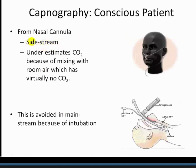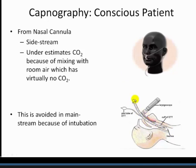Sidestream capnography is quick and can work with nasal cannula — patients simply wear the cannula around their ears while oxygen is blown into their nose. However, a problem with sidestream is that CO2 can be underestimated because it mixes with room air, which has virtually no CO2, causing leaks in the system and readings that are generally lower than what's actually there. This is avoided with mainstream capnography because the endotracheal tube captures everything directly from the lungs — no mixing with ambient air — making it more accurate, though it requires placement of an endotracheal tube, which may not always be an option.